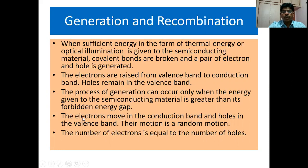The electrons move in the conduction band and holes in the valence band. Their motion is a random motion. The number of electrons is equal to the number of holes, as we have already seen in the case of an intrinsic semiconductor.